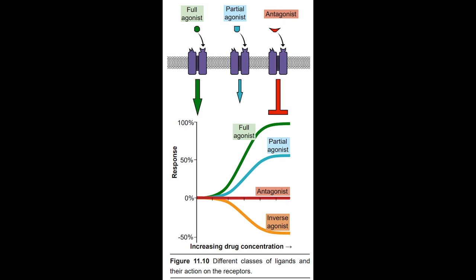Agonists themselves can be divided into three different classes. A full agonist is a substance that can activate the receptor to the maximal degree at high concentrations — endogenous neurotransmitters like glutamate are full agonists, setting the 100% value on a dose-response curve. A partial agonist can also activate the receptor by binding to the orthosteric site, but is unable to fully activate the receptor even at increasingly high doses. On a dose-response curve, the partial agonist activates the receptor to a lesser degree than the full agonist. Some partial agonists can be used clinically for treating a variety of disorders, including anxiety, psychosis, and chronic pain. Another class are inverse agonists, which cause an opposite response from an agonist.